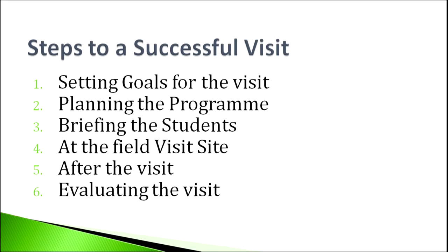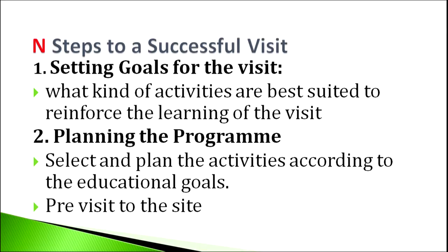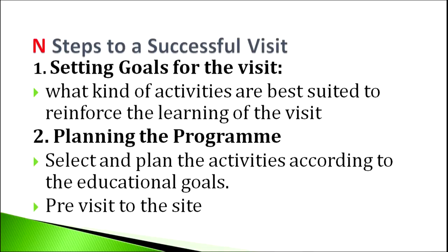There are certain steps for planning a successful visit. Step one: you set goals for the visit. Goals are determined by your educational objectives. For example, if you want students to learn about plants, you can arrange a field visit to a nearby garden or school garden. After deciding the site, think about what kinds of activities can be arranged there. Step two is planning for the program. You have finalized that you will take children to a nearby park.